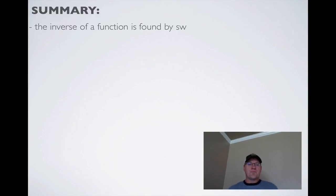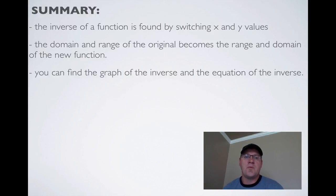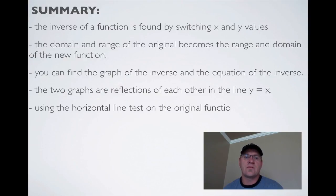In summary, the inverse of a function is found by switching x and y values. The domain and range of the original become the range and domain of the new function. You can find the graph of the inverse and the equation of the inverse. The two graphs are reflections of each other in the line y equals x. Using the horizontal line test on the original function will tell you if its inverse is a function.